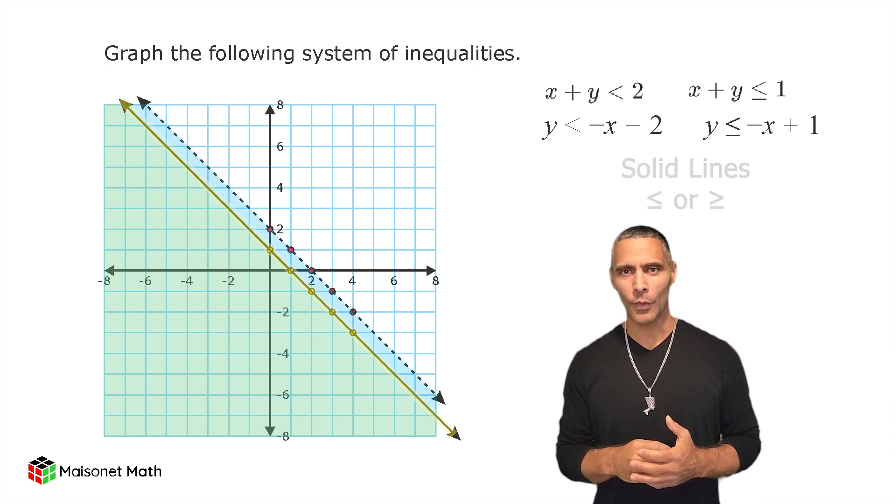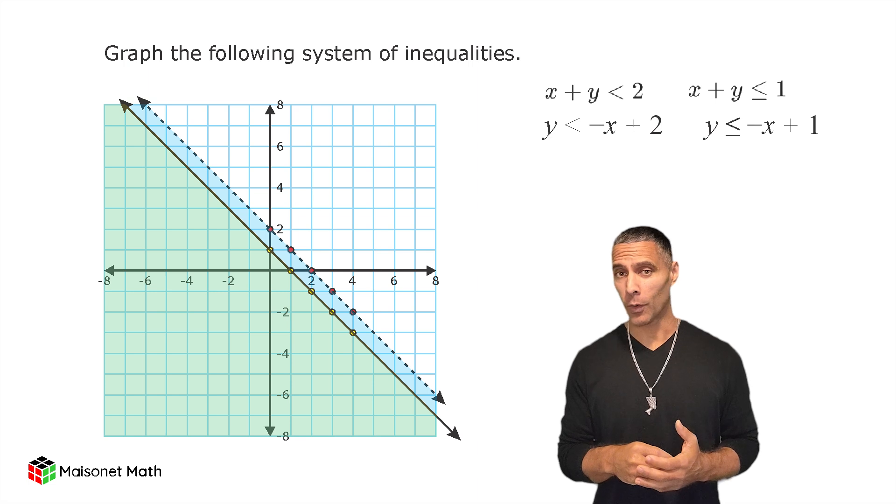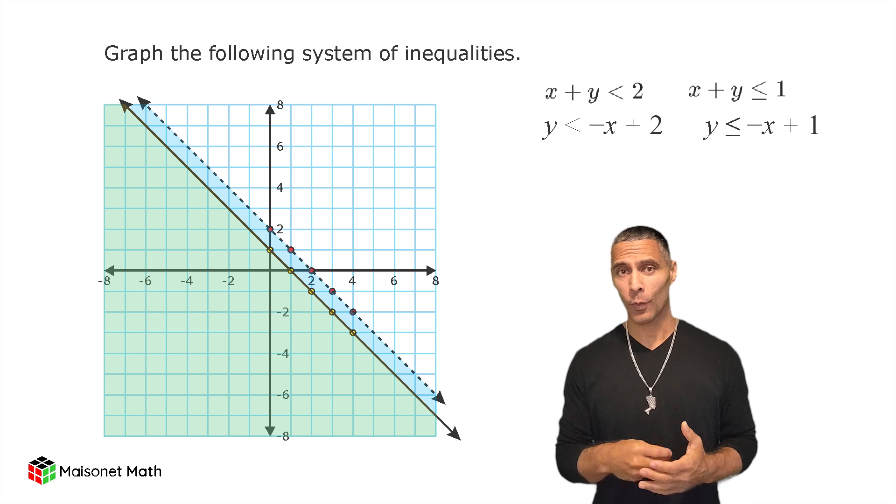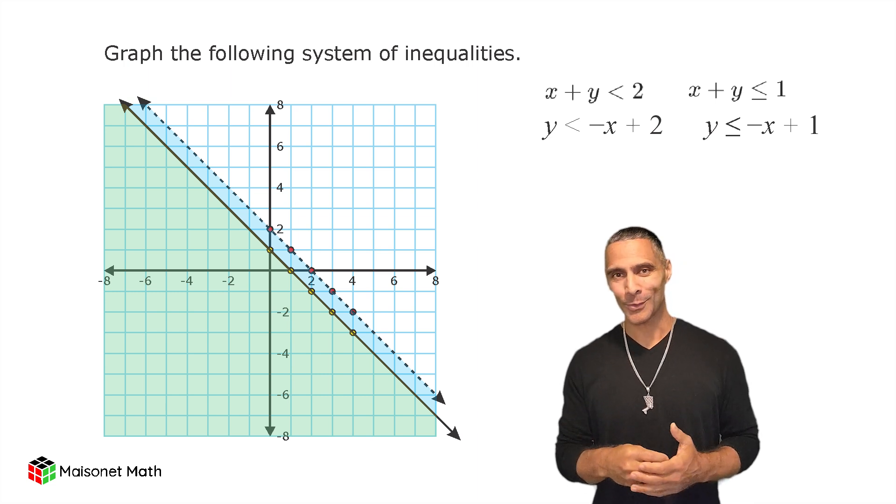Always shade below the line for y is less than or y is less than or equal to, and above the line for y is greater than or y is greater than or equal to. The overlapping shaded region represents the complete solution set for the system of inequalities. Any point in this region will satisfy both inequalities.